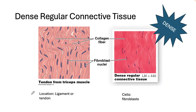Dense regular connective tissue is found in ligaments that hold bones together or tendons that attach muscles to bone. You can see there isn't a lot of space around the cells and fibers. It contains a lot of collagen fibers running parallel in one direction, giving it a lot of tensile strength — strength in one direction. If you pull in the direction the fibers run it's very strong, but hitting it across the grain can cause it to tear. The cells are called fibroblasts. This tissue has a very poor blood supply, which is why ligaments and tendons take a long time to heal.